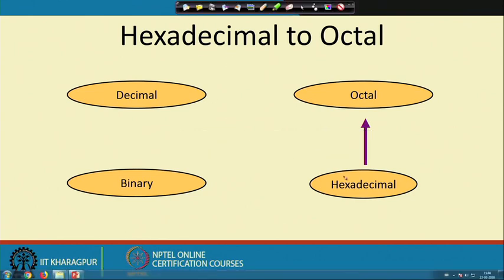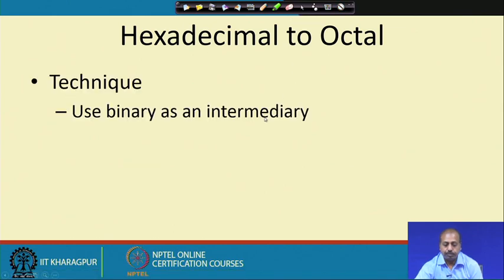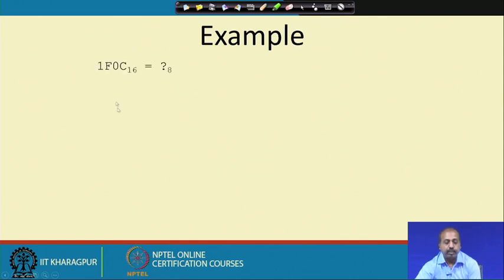Now hexadecimal to octal. You can guess what we will be doing — we convert hexadecimal to binary, and from binary we convert to octal, using binary as the intermediary.